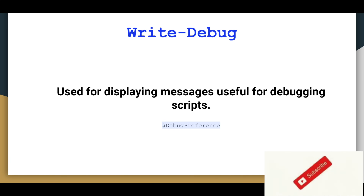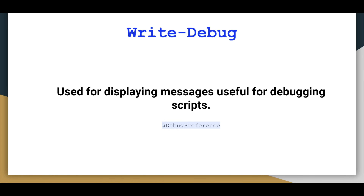One of them is Write-Debug. We use this when we want to display messages useful for debugging scripts. If your script is not working correctly and there's some error in between, you put those debug messages between different lines. That way you can see if it's displaying correctly — for example, 'on this line I'm expecting this value' — and you continue, allowing you to figure out what the error is.